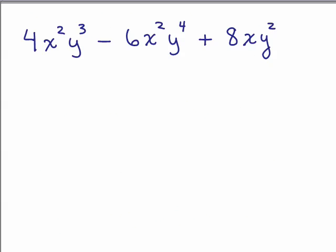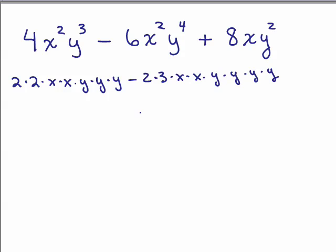Now we have one just a little bit more complicated. So what we're trying to do is find what the greatest common factor is. Even though I wouldn't normally do this, I'm going to factor each one of these three terms completely. Remember, terms are separated by the plus or minus sign. So I have 2 times 2 times x times x times y times y times y minus 2 times 3 times x times x times y times y times y times y, and then I really have a plus 2 times 2 times 2 times x times y times y.